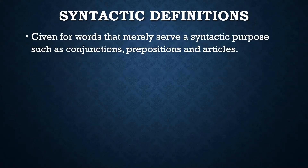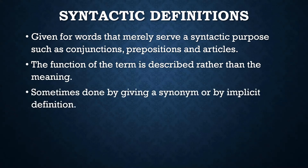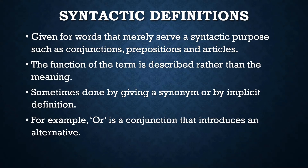Syntactic definitions are given for words that merely serve a syntactic purpose in our language — like conjunctions, prepositions, and articles such as 'a' and 'the.' It's hard to define these terms, so instead the function of the term is described rather than the meaning itself. That might be done by giving a synonym or an implicit definition — for example, 'or' is a conjunction that introduces an alternative, used in a sentence like 'you can have soup or salad.' Technically this isn't a pure definition, but it does help someone understand the meaning of the word.